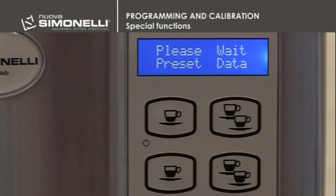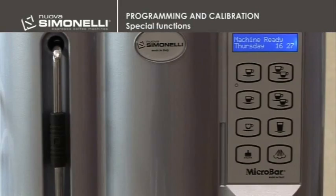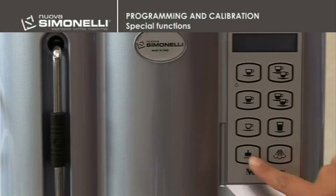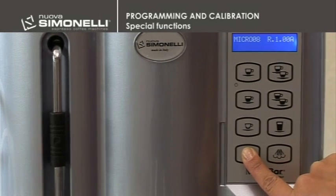Water Litres Counter Zeroing: this enables resetting the water litres counter to zero. It is necessary to switch the machine off using the main switch placed behind it, push the hot water key, and then switch the machine on pushing the key.